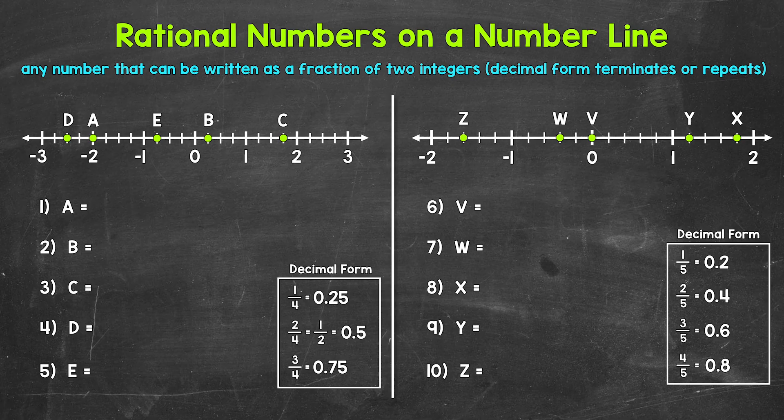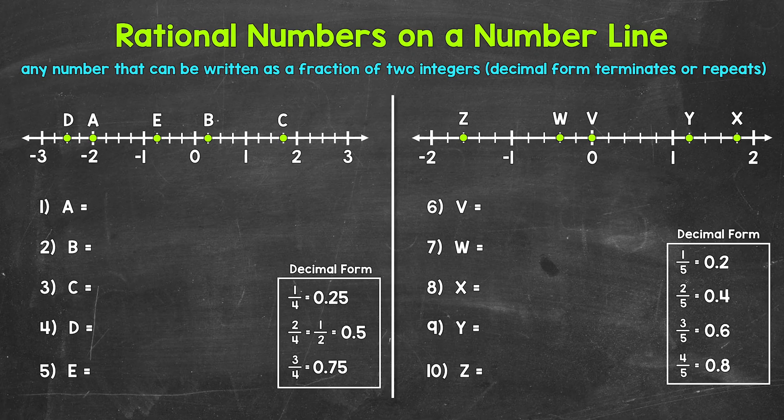Before we jump into number 1, we need to figure out what we're working with as far as how this number line is presented. The lowest value shown is negative 3 and the highest is positive 3. In between each number, the number line is split into four sections — fourths. So starting at zero going right, we have one fourth, two fourths (which is one half), three fourths, one, one and one fourth, one and a half, one and three fourths, two, and so on.